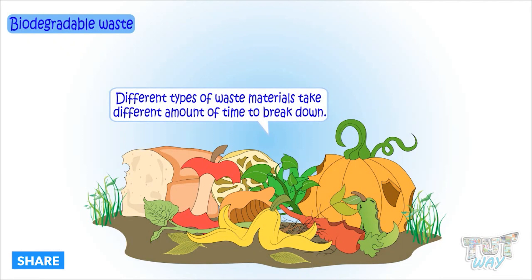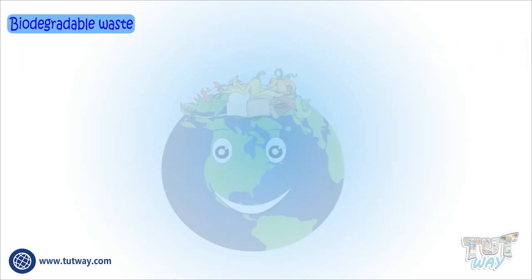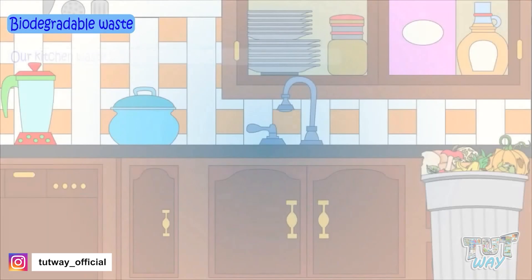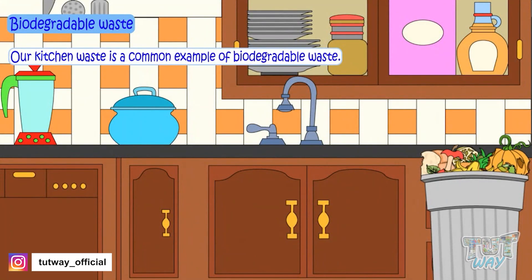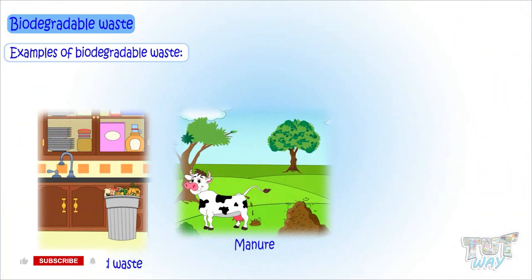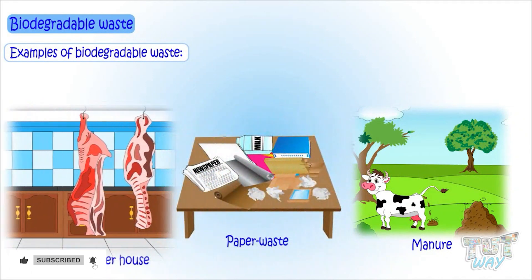Different types of waste take different amounts of time to break down. All types of waste that break down in weeks or months and become part of the soil are known as biodegradable waste, and such waste poses no threat to the environment. Our kitchen waste is the most common example. More examples of biodegradable waste are kitchen food waste, manure, sewage waste, slaughterhouse waste, and paper waste.